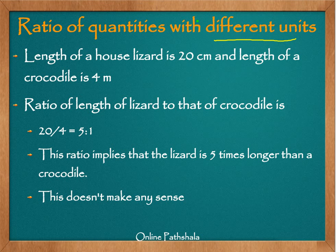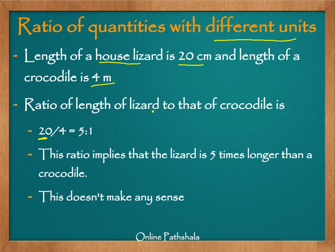The length of a house lizard is 20 centimeters and the length of a crocodile is 4 meters. I'm interested in finding the ratio of the length of a house lizard to the length of a crocodile. We simply calculate the ratio by taking the first quantity, 20, as the numerator and the crocodile's length, 4, as the denominator — giving us 20 by 4.